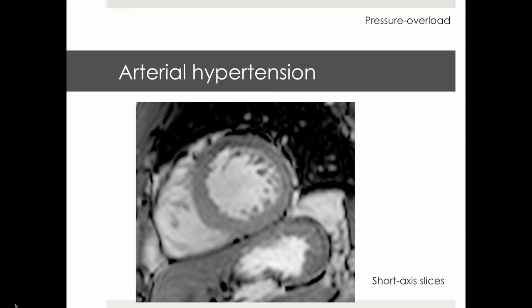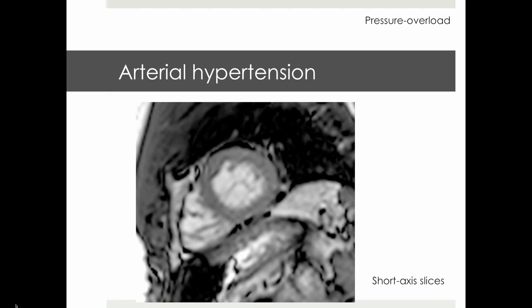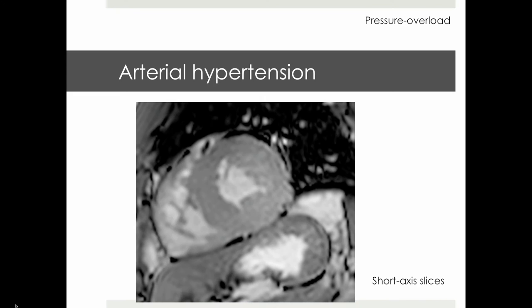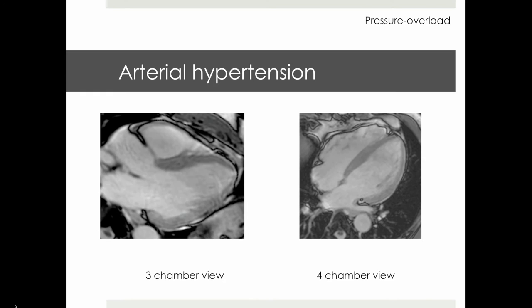Arterial hypertension is one of the most common causes of pressure overload hypertrophy. In this example of three short axis slices — apical, mid and basal — one can appreciate that increase in LV thickness is uniform across all 16 segments of the left ventricle, which is descriptive of concentric hypertrophy.